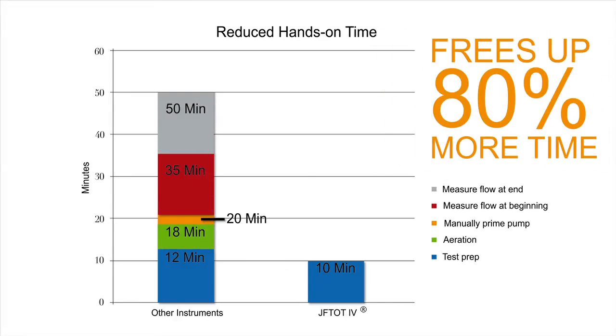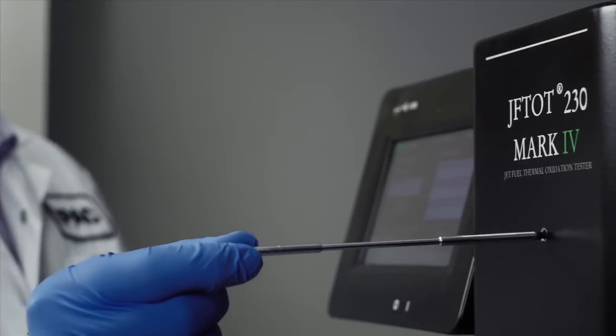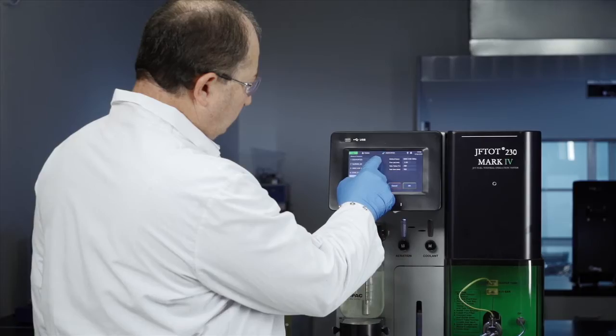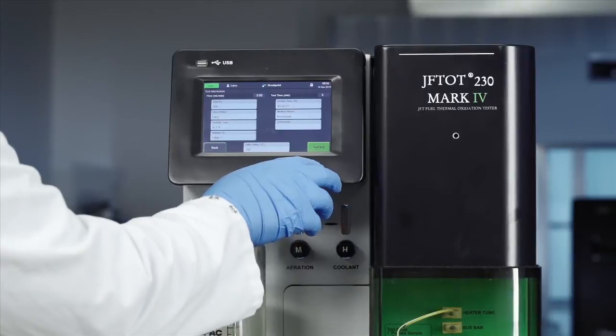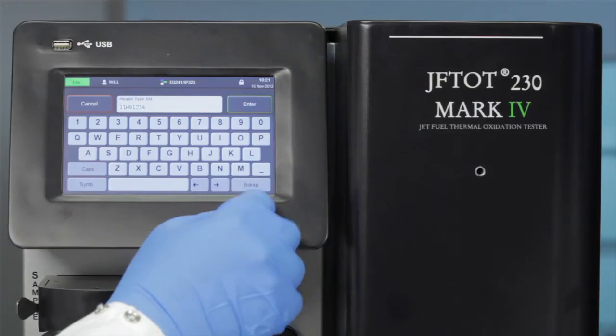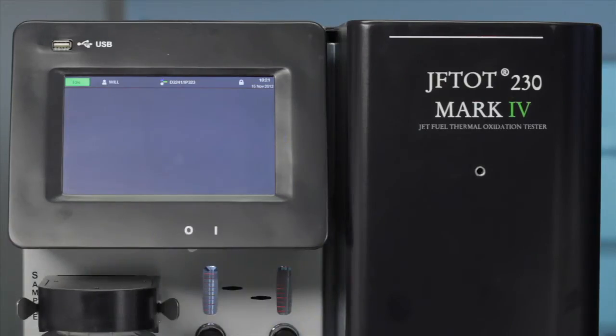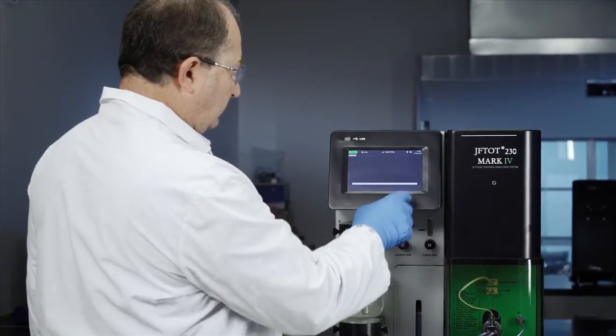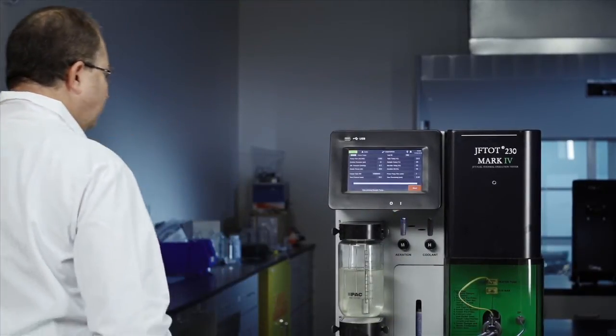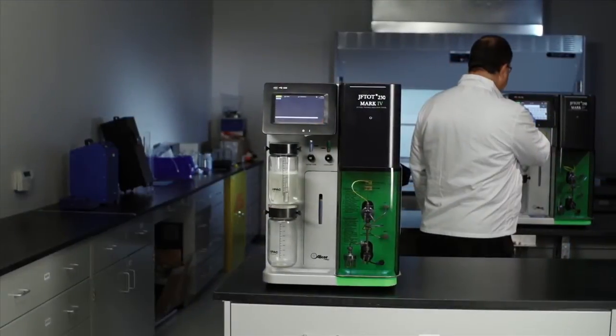With the new Jephtot 4, the operator only spends about 10 minutes preparing and starting a test, which is a tremendous improvement over the approximate 50 minutes of total time required by other instruments. Saving approximately 40 minutes with each test means that your operators are free to perform their other job duties.